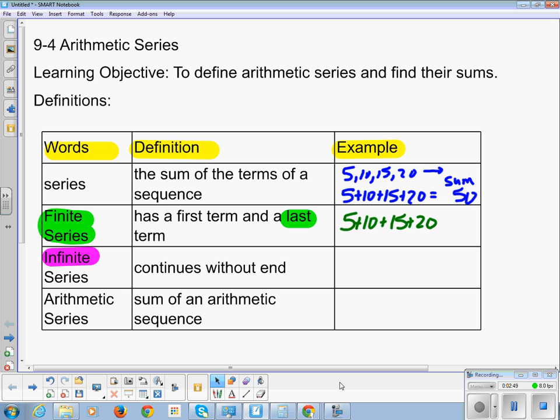An infinite series continues without end. And the way we write those guys, we just go, it's the same, but at the end we just go dot, dot, dot. The dot, dot, dot says forever.